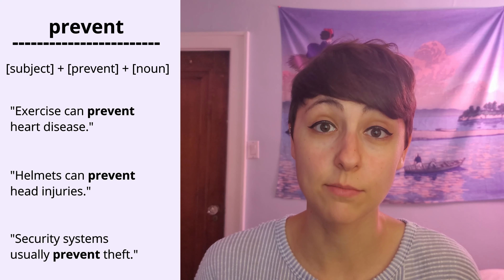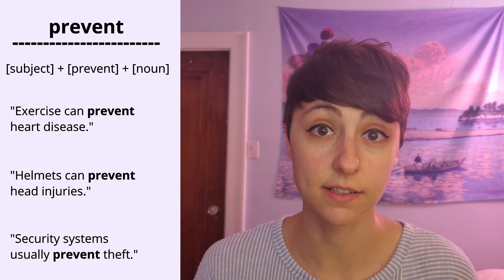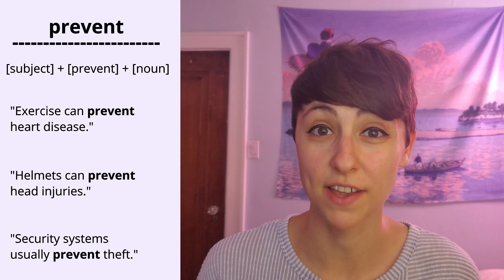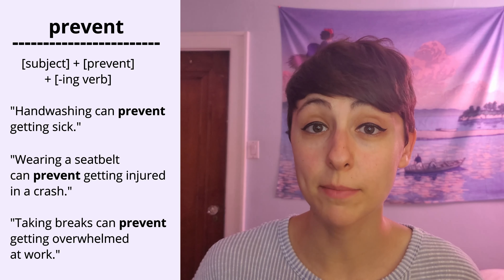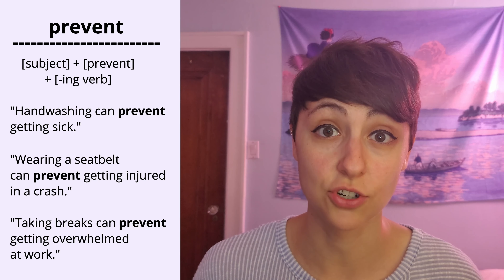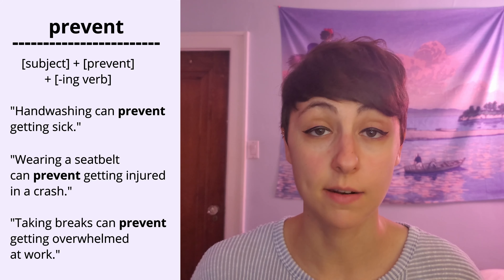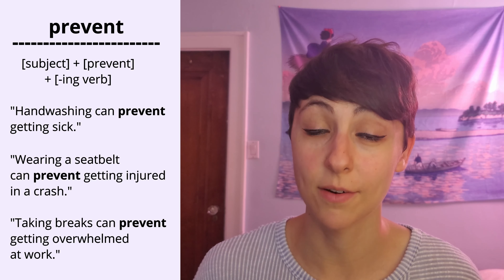Exercise can prevent heart disease. Helmets can prevent head injuries. Security systems usually prevent theft. We can also use it with the -ing form of the verb. Hand washing can prevent getting sick. Wearing a seat belt can prevent getting injured in a crash. Taking breaks can prevent getting overwhelmed at work.